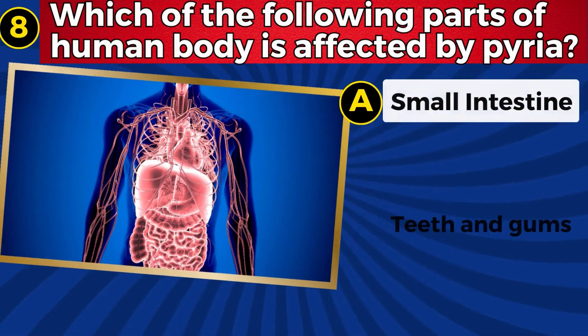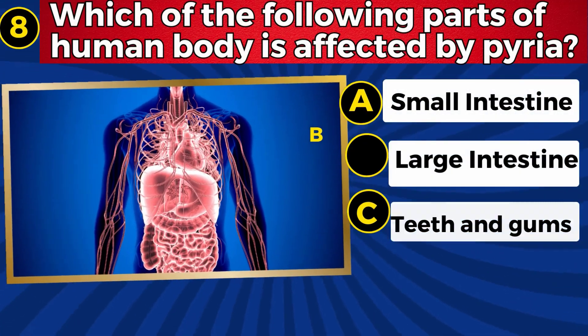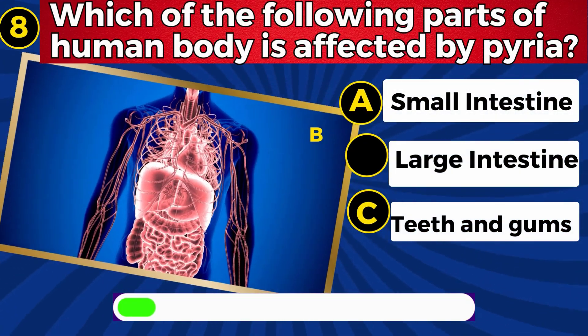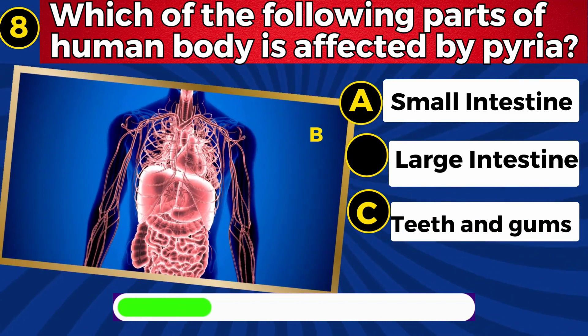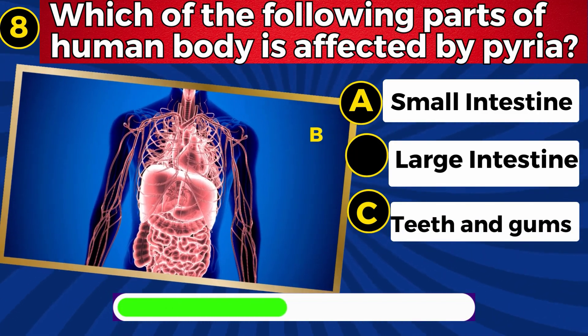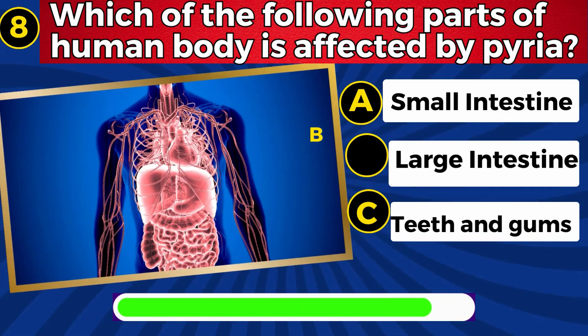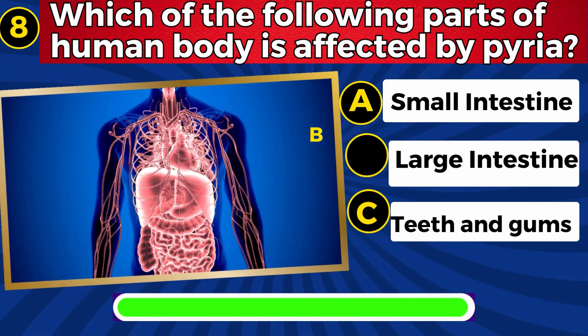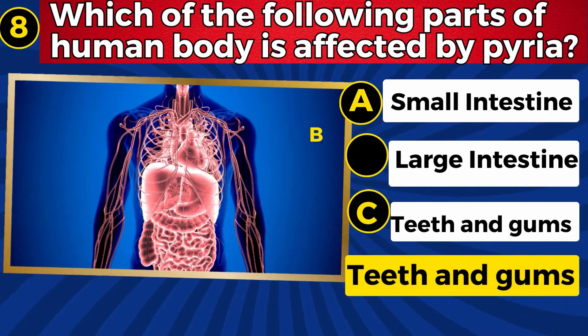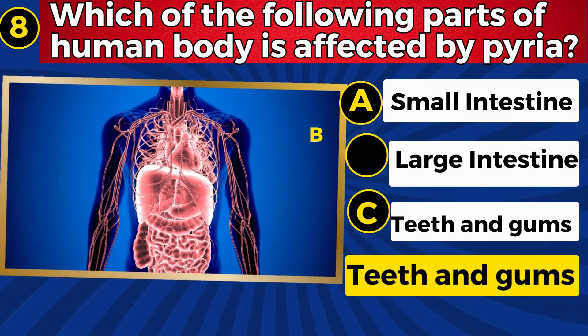Which of the following parts of the human body is affected by periodontal disease? Teeth and gums.